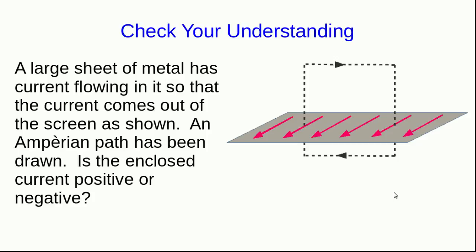Here's the question I asked, and all you have to do to answer it is stick your thumb of your right hand in the direction of the current, which is out of the screen, and curl your fingers. You'll find that they're curling in the opposite sense to the direction you go around this Amperian path. From your perspective, your fingers should right now be coiling counterclockwise, but the path is showing a clockwise direction, and so that tells you that the enclosed current is negative in our sign convention.